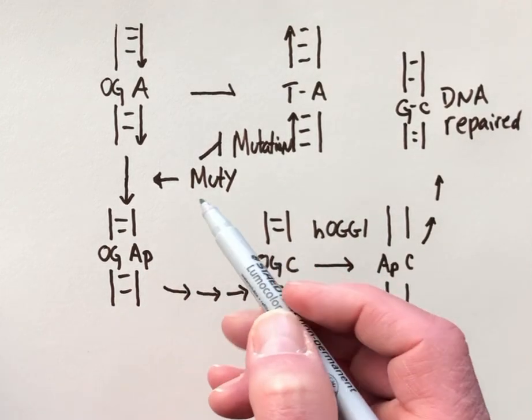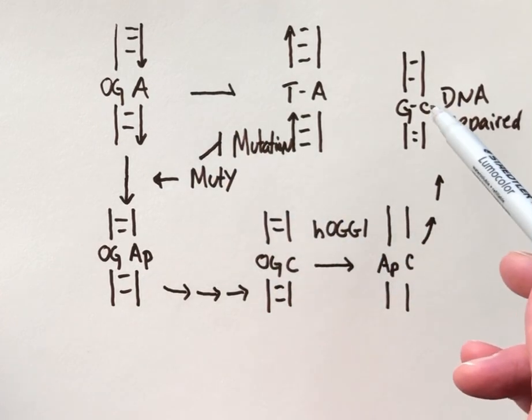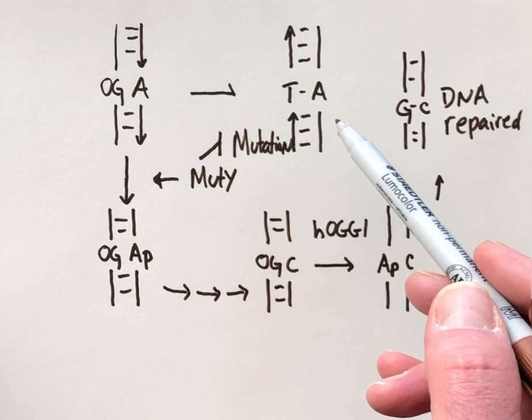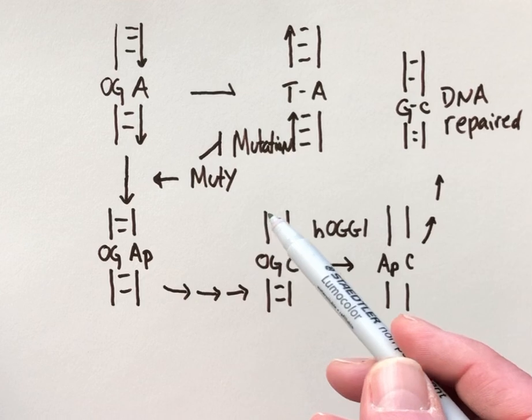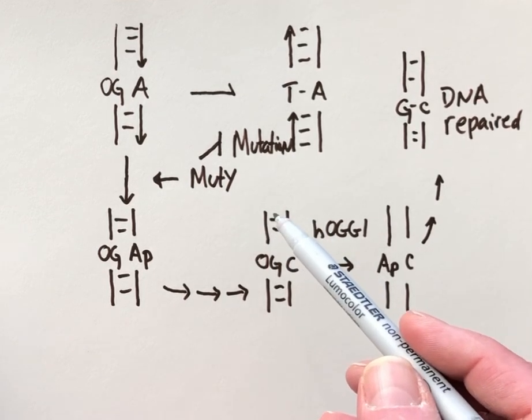And MutY is like the last line of defense to prevent GC from turning into a TA transversion mutation. And when this enzyme underperforms in humans, you're at risk for getting cancer, especially colon cancer.